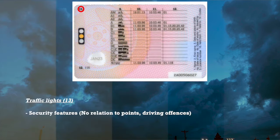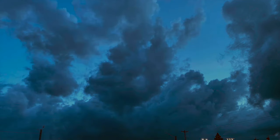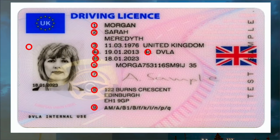13 shows the traffic lights, which is only for security features — no relation to driving points or offenses. The bottom right of the card is a unique card identifier. I hope everyone learned something from this video. Thank you for watching.